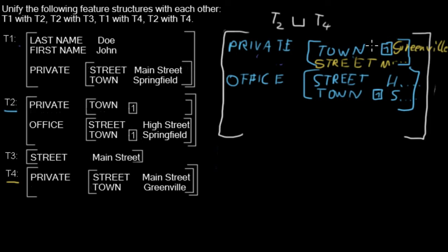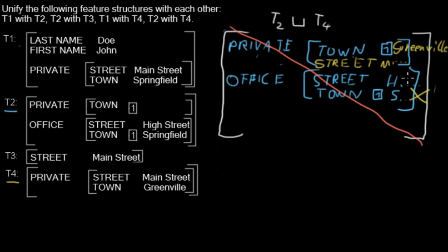Now we have a problem. The pointer in front of a value means there must be the same value. Here 'town' has the value greenville, but here 'town' with the same pointer has the value springfield. That means we have a conflict — we have different values where we are supposed to have the same value.